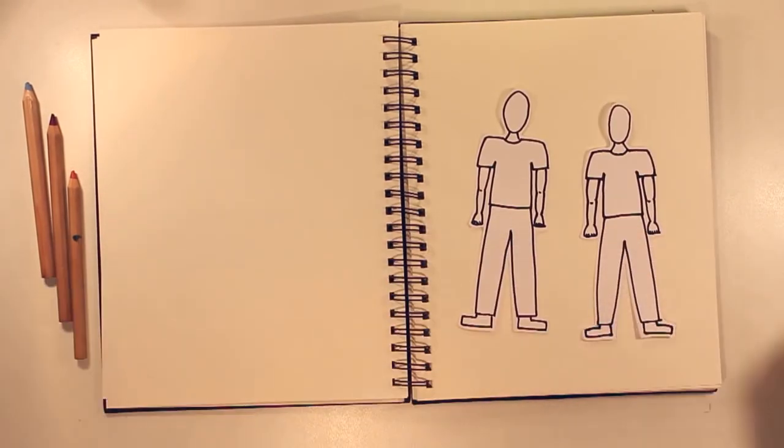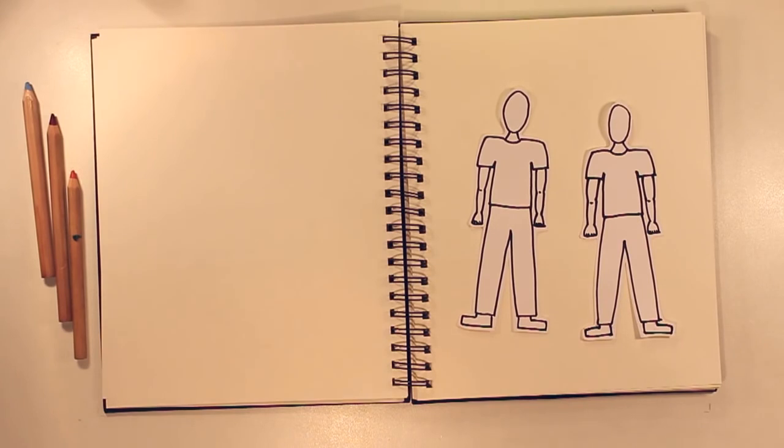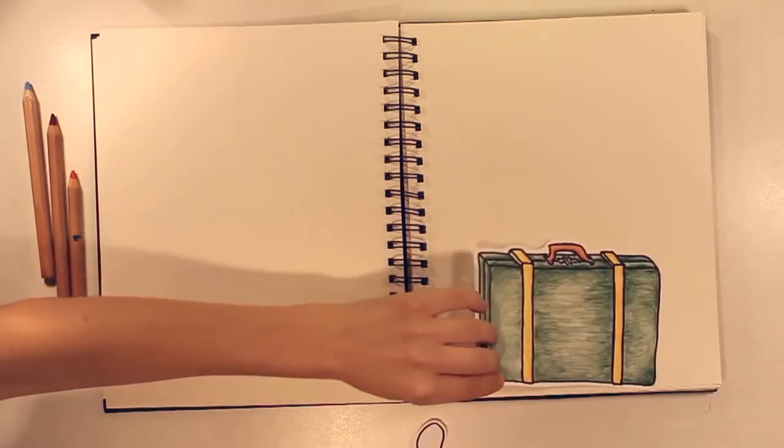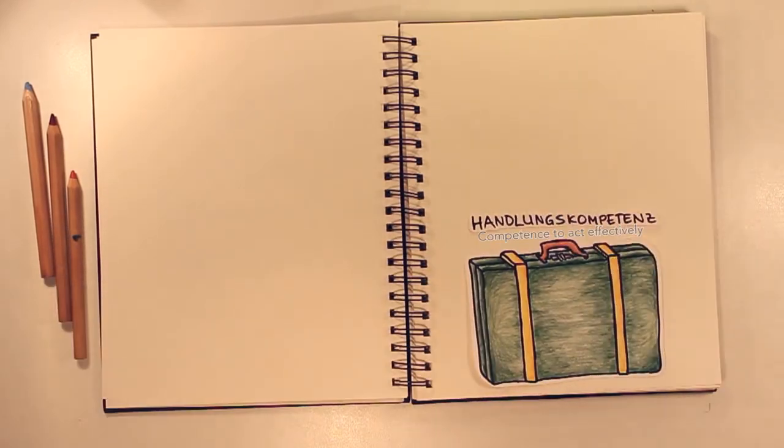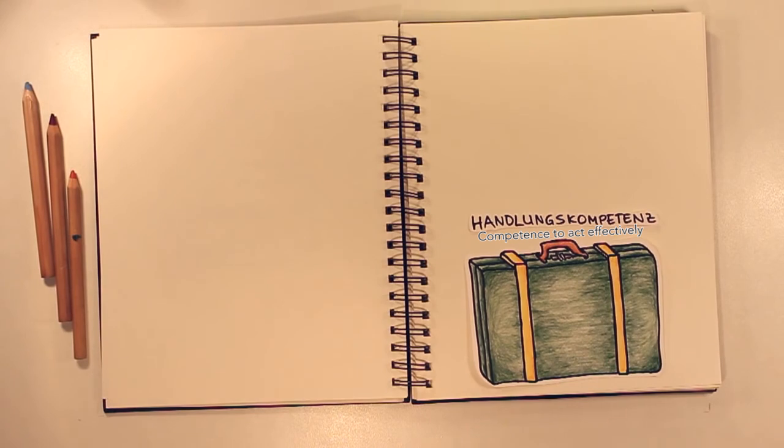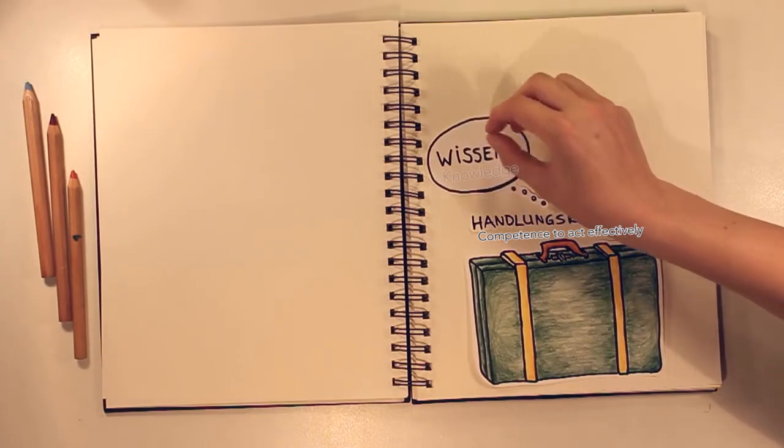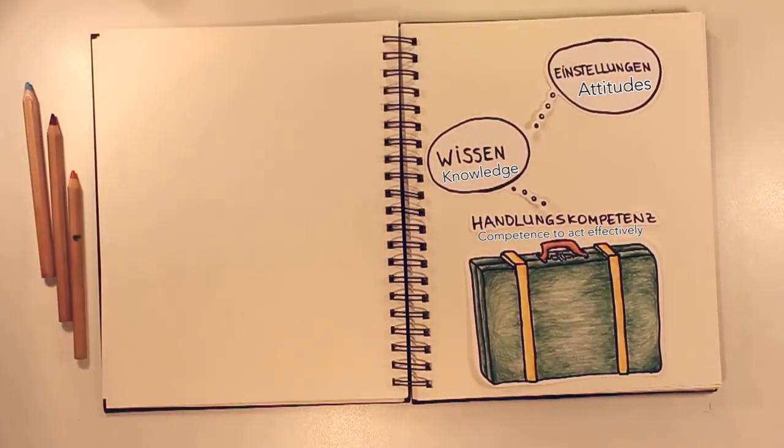In fact, every intercultural situation is one in which two individuals meet. The prerequisite for mastering such a situation is the competence to act effectively, which is made up of several part competencies. These part aspects of effective action can be seen on three levels: our knowledge, our attitudes, but also our behaviour.